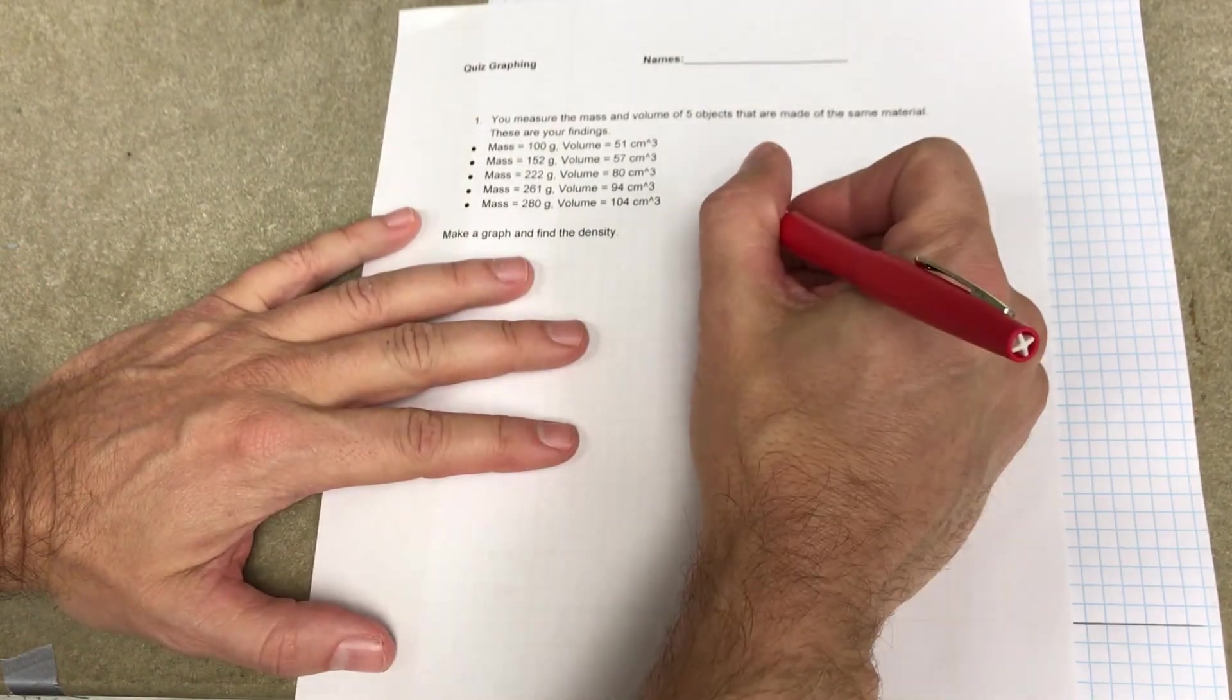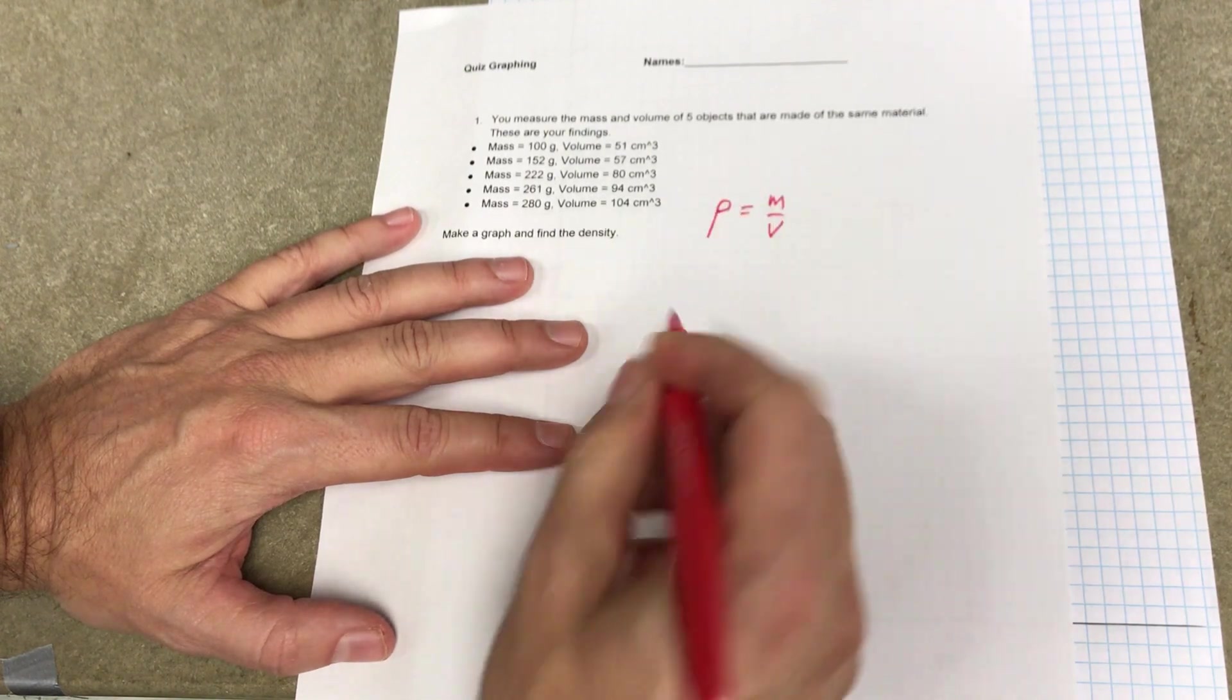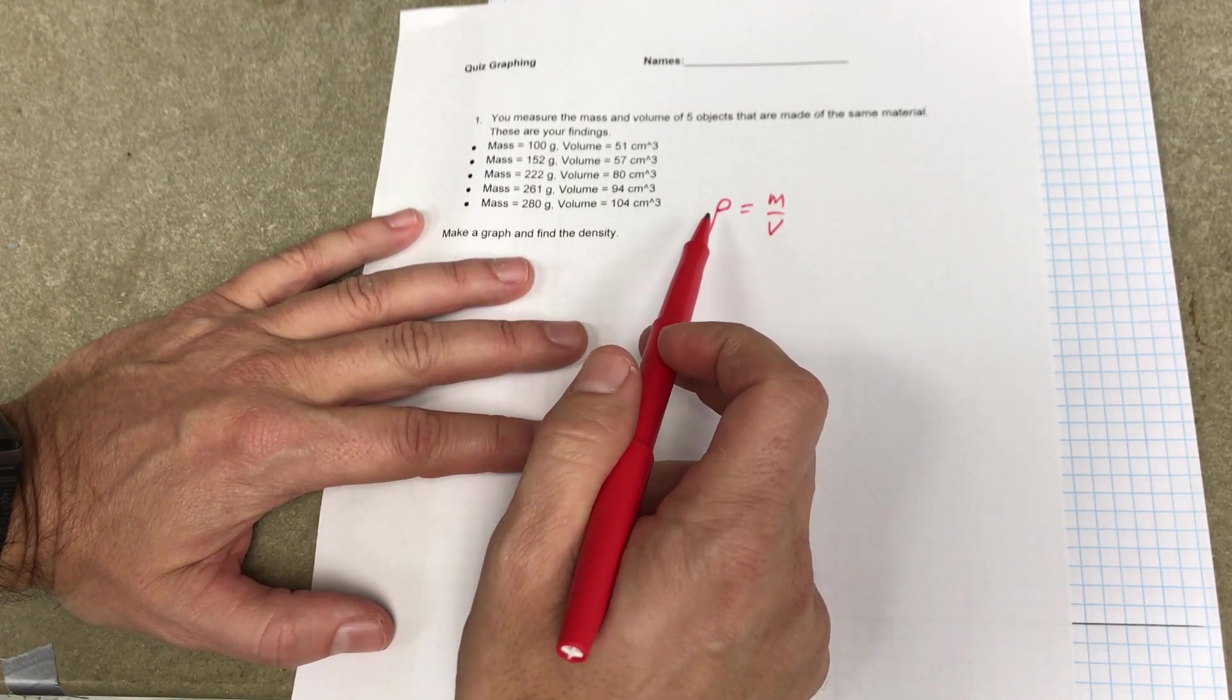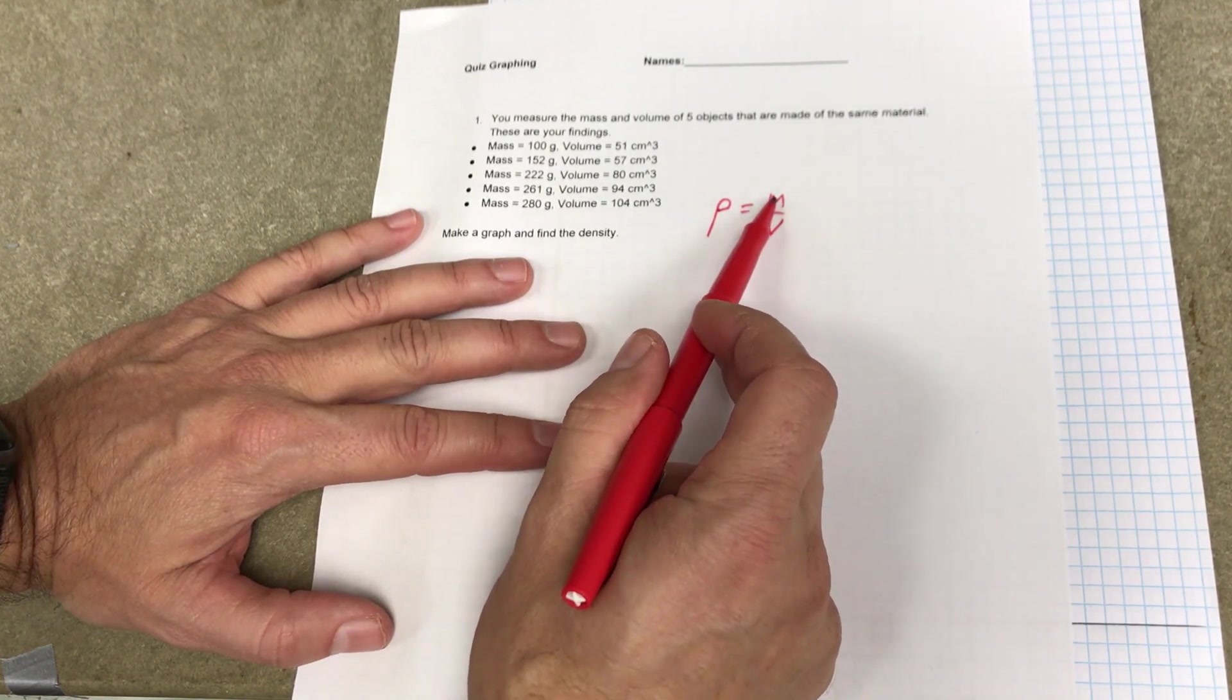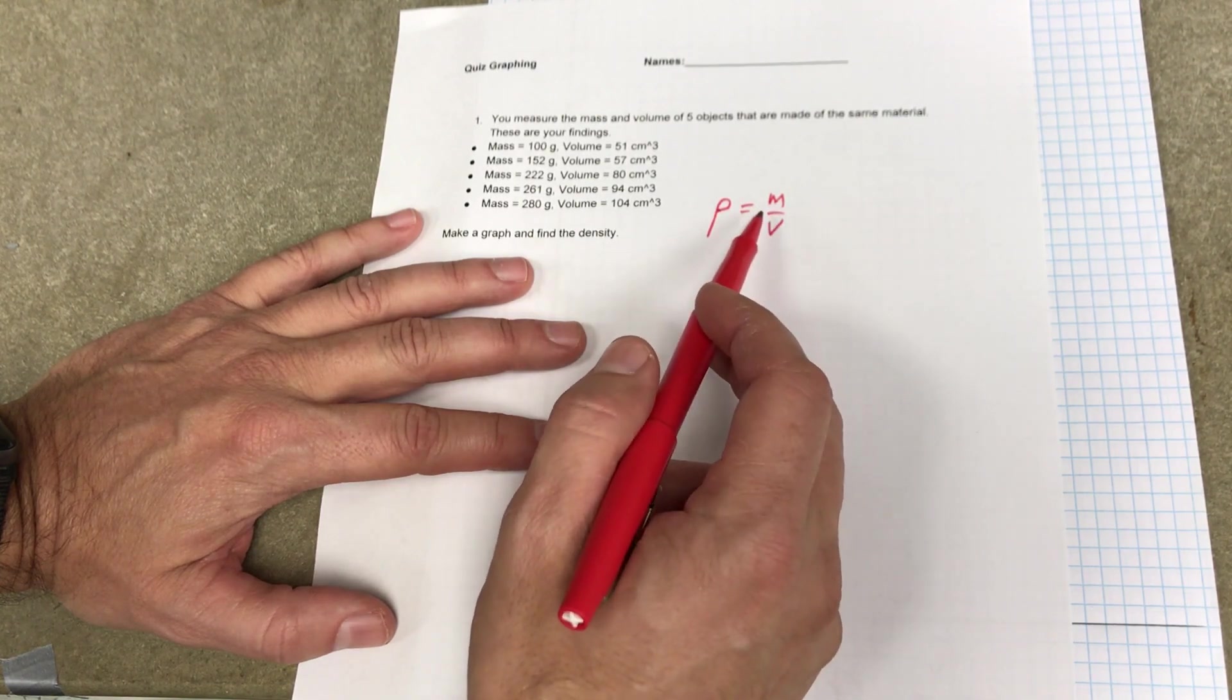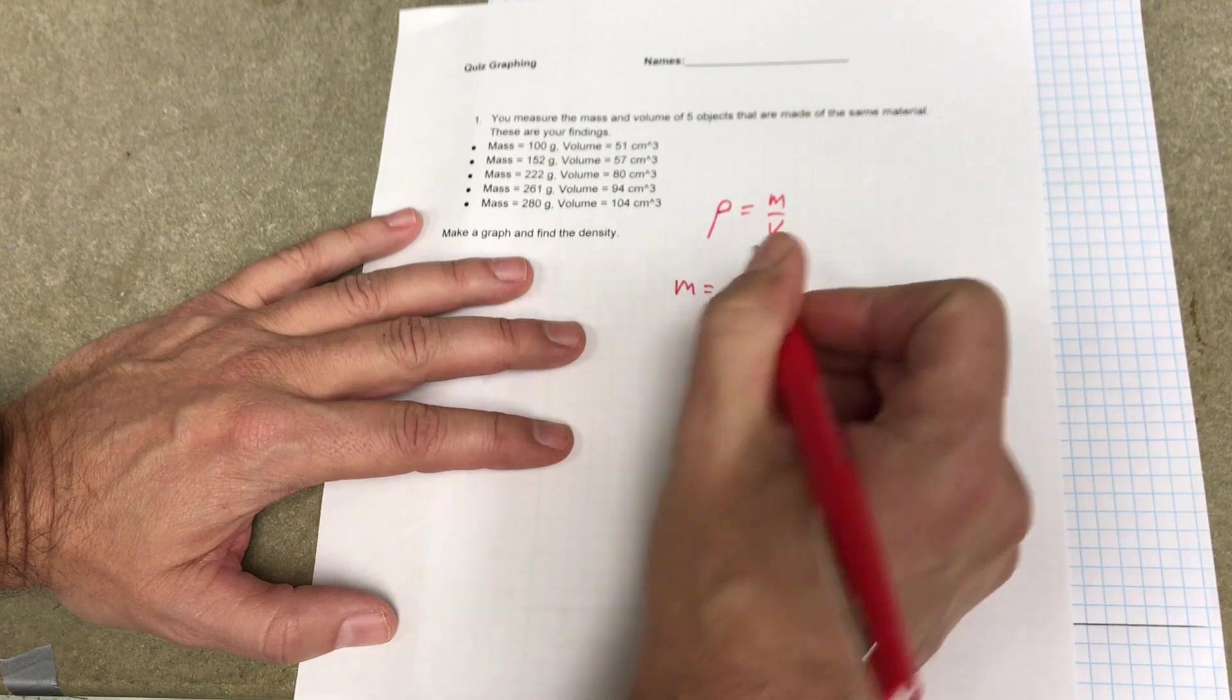So I know that the density is mass divided by volume. And that's the Greek letter rho. We like to use that instead of D, because it's cool. So I'm going to be changing the mass and the volume. And I want to know the relationship between that. And so if I solve this for mass, I get mass equals density times volume.